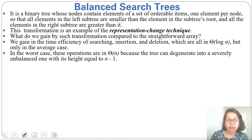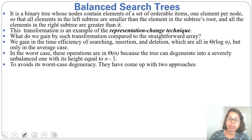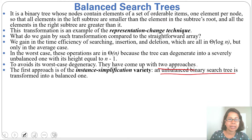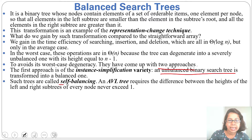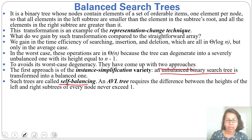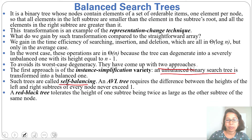To avoid this worst-case time inefficiency, there are two approaches. The first approach is the instance simplification variety — an unbalanced binary search tree is transformed into a balanced one by self-balancing, ensuring the difference between the height of the left and right subtree of every node never exceeds 1. In a red-black tree, it tolerates the height of one subtree being twice as large as the other.